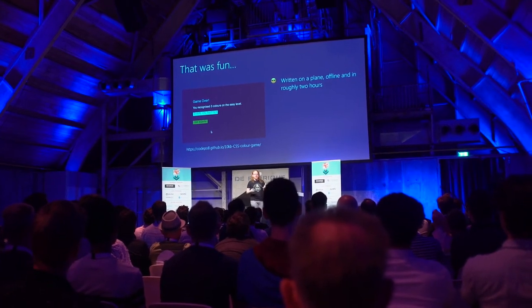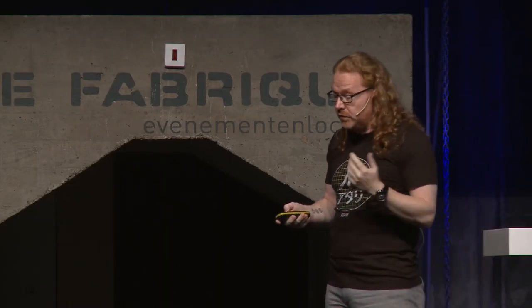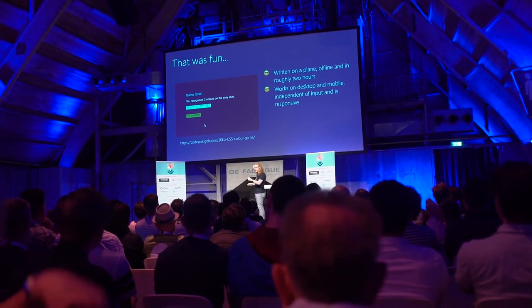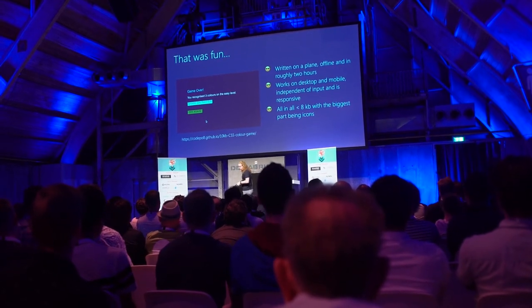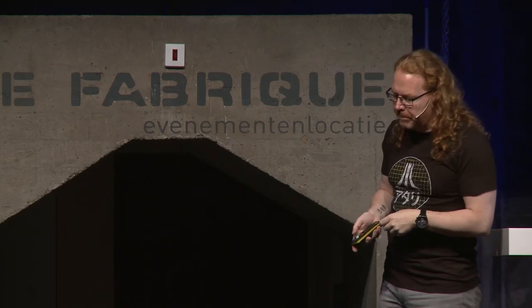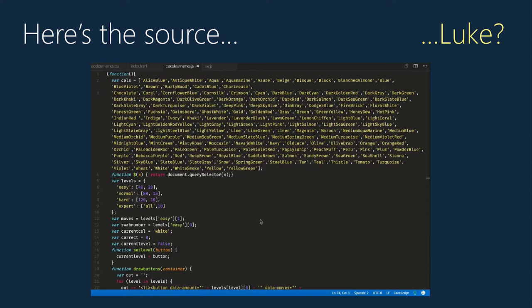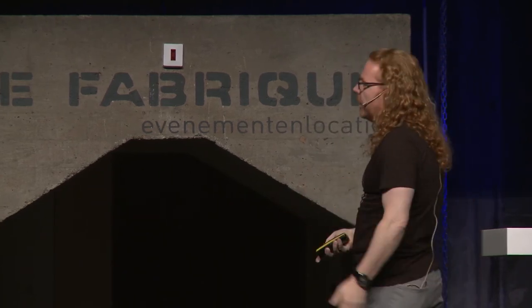My browser has a built-in editor in the dev tools — I used Firefox back then, I still use it a lot. The game works on desktop and mobile independent of input and is responsive: I supported touch, keyboard, mouse-click, and pen. All in all it was less than 8k, with the biggest part being the icons. And here's the full source in Visual Studio Code — the whole thing is about 150 lines of JavaScript. That gives you all the functionality: the levels, the counting, all the fun stuff.